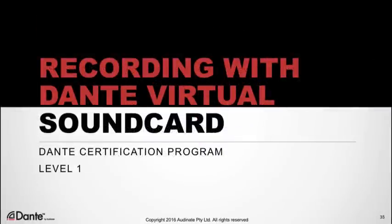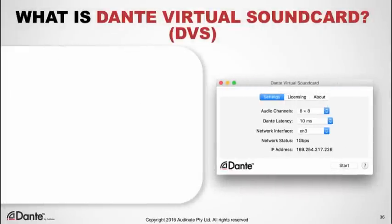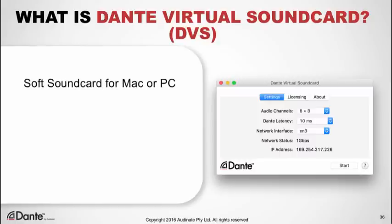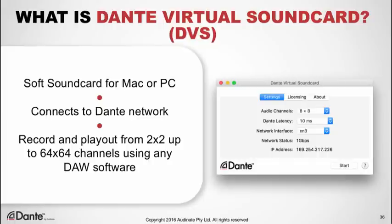Now let's talk about recording with Dante Virtual Sound Card — this is an incredibly useful tool, and level two of this training contains a much more in-depth look at the product, but we'll show you how to start using it immediately. Dante Virtual Sound Card is software from Audinate that you install into your Mac or PC. It behaves like a regular hardware sound card, but instead of connecting to attached hardware, it connects to other Dante devices using a regular wired network connection. With Dante Virtual Sound Card, your computer becomes part of the Dante network, and you can easily record and play out up to 64 channels of audio using applications such as Logic, Pro Tools, Cubase, and many others.